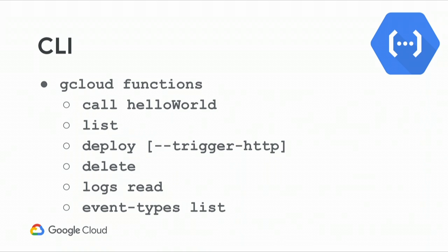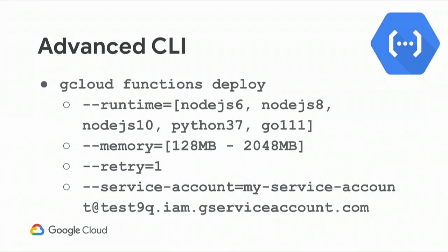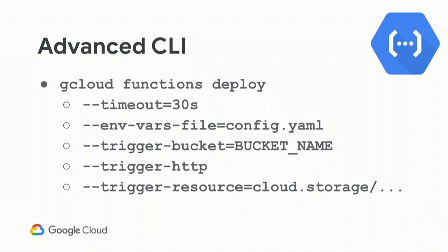For Go, we use the native HTTP client and you can send your response natively. You can deploy Google Cloud Functions from the CLI — calling functions, listing all your functions, deploying, deleting, and listing all the event types. There are advanced options for the CLI, including different runtimes, different memory allocations up to 2 gigabytes, a number of retries in case your function fails, and specifying that the function runs as a certain service account. Timeouts, environment variables, triggers, et cetera.